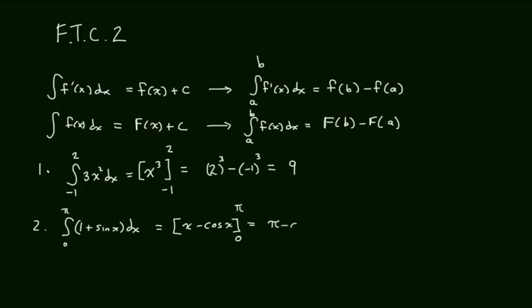So, then I have pi minus the cosine of pi minus 0 minus the cosine of 0. That, of course, is going to give me pi minus a negative 1, so pi plus 1, minus a minus plus cosine of 0 is 1. So, in the end, this comes out to be pi plus 2. That's my integral value.